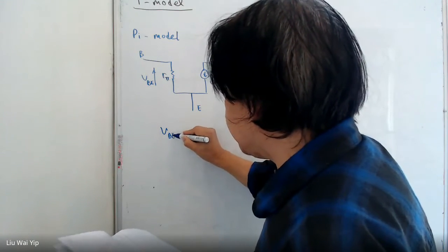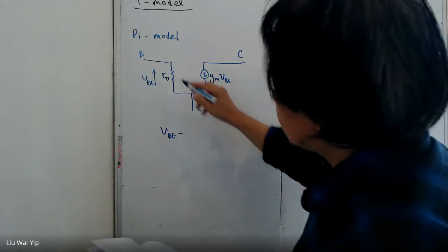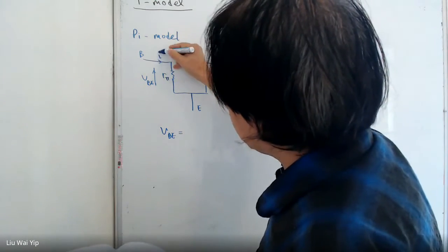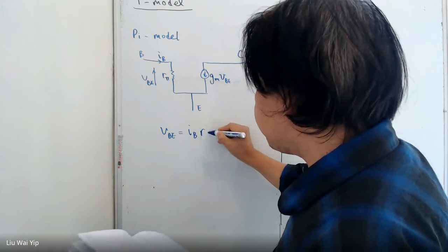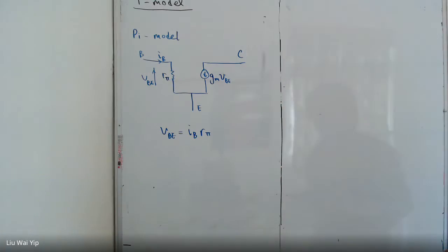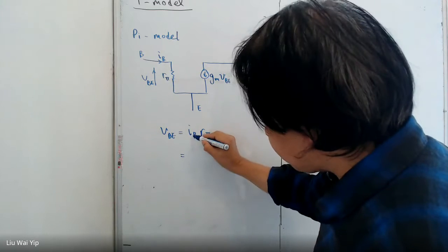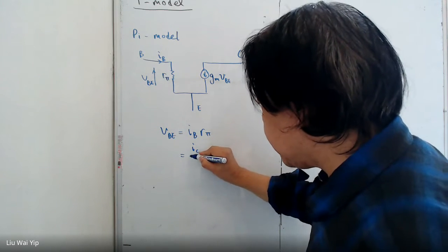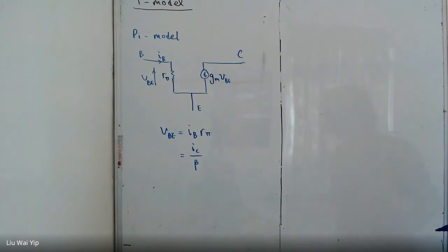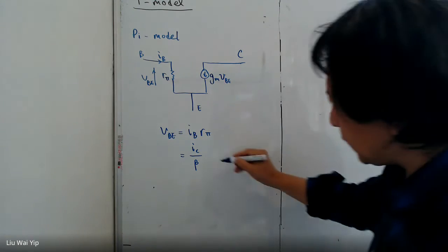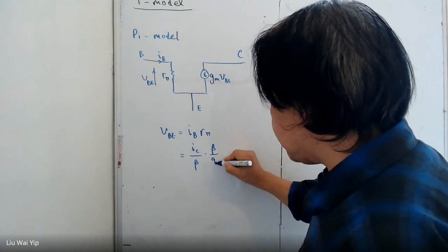VBE is essentially IB times R pi. And if you do it carefully, IB is just IC divided by beta, while R pi is beta times GM.